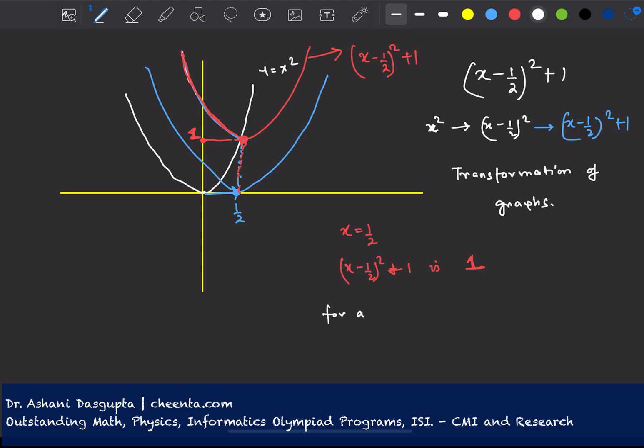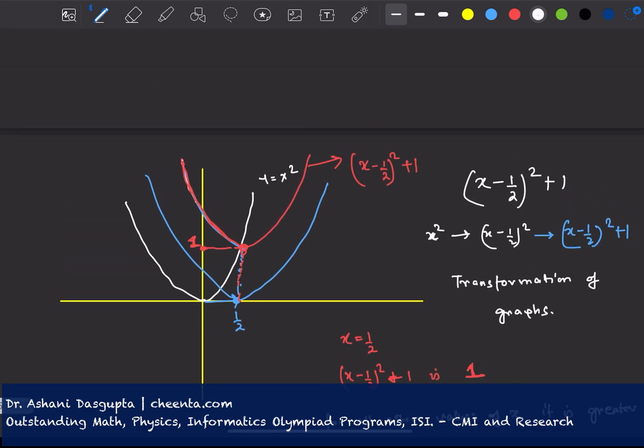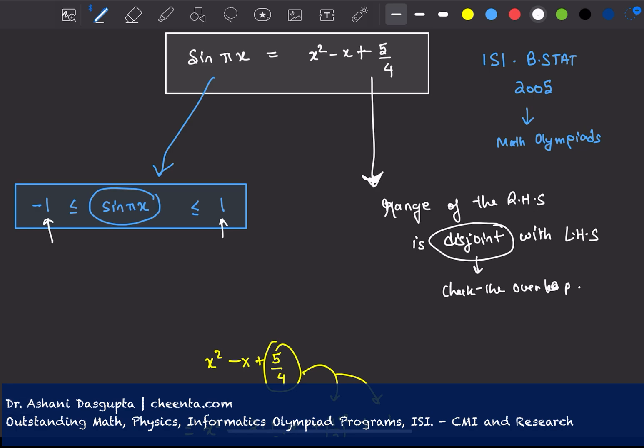For all other values of x, it is greater than 1. So we are almost done because sine of pi x is between minus 1 and plus 1. And the right-hand side is almost always greater than 1, except at x equals to half. So this is the only place where they could potentially overlap.